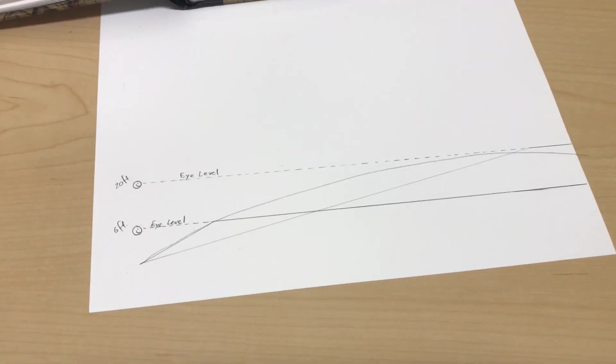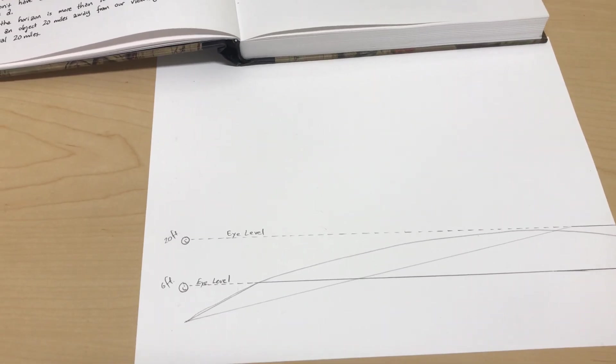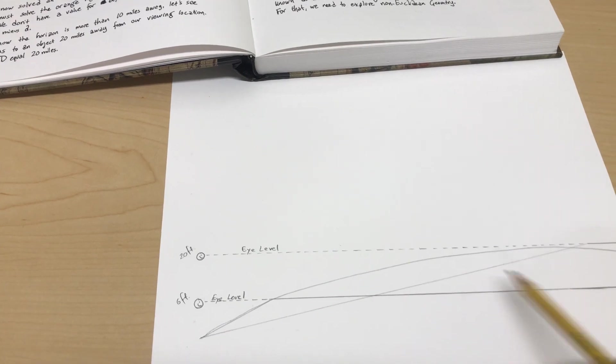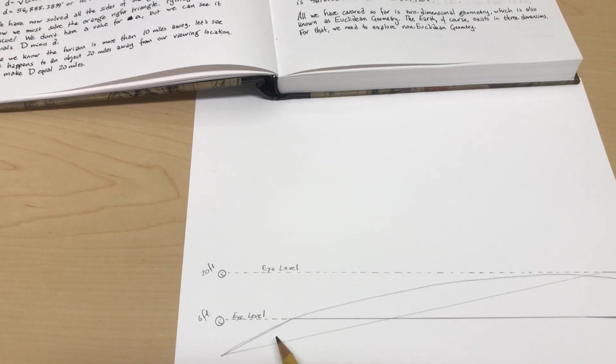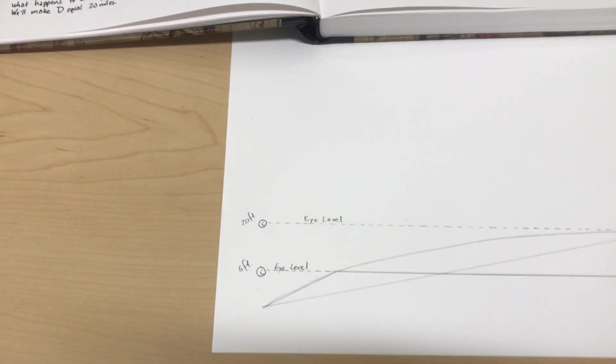That's what's going on. There's not this flat table that changes elevation just because you change your eye level. You're just seeing the edge of the curvature and what's visible.